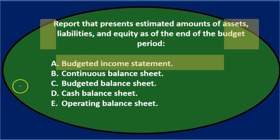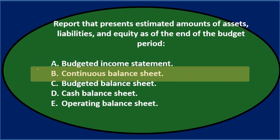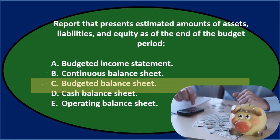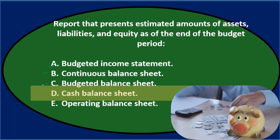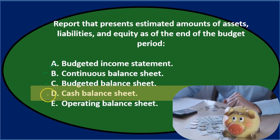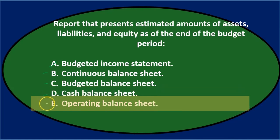Let's go through the options. A says budgeted income statement — it's not going to be the income statement because we're not talking about revenue and expenses. B says continuous balance sheet — that has the keyword 'balance sheet,' so I'll keep that for now. C says budgeted balance sheet — that seems pretty good. D says cash balance sheet, and E says operating balance sheet. Notice they're using the key term 'balance sheet' in all of these, which eliminates A, the income statement.